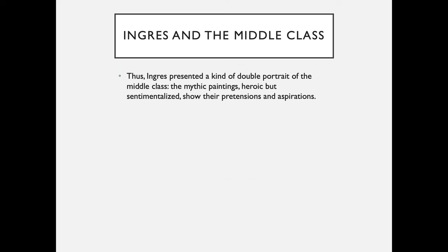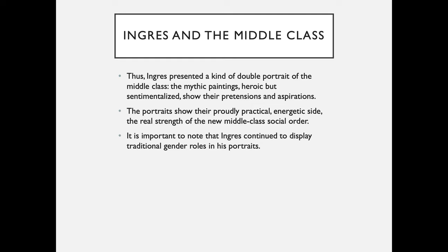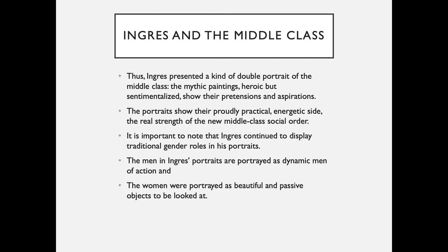Ingres and the middle class. Ingres presents a kind of double portrait of the middle class: the mythic paintings — heroic but sentimentalized — show their pretensions and aspirations, while the portraits show their proudly practical, energetic side, the real strength of the new middle-class social order. It is important to note that Ingres continued to display traditional gender roles in his portraits: the men are portrayed as dynamic men of action, and the women are portrayed as beautiful and passive objects to be looked at.